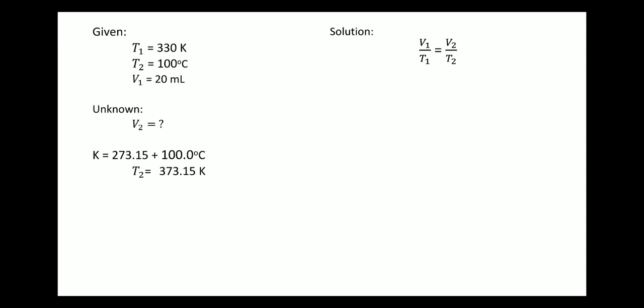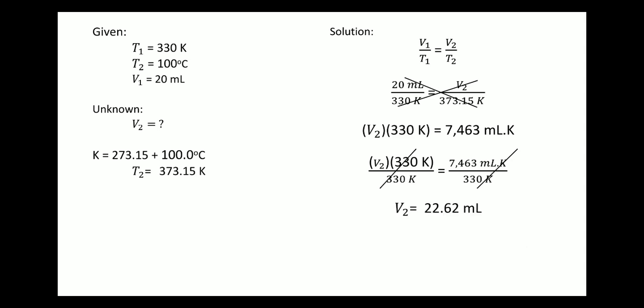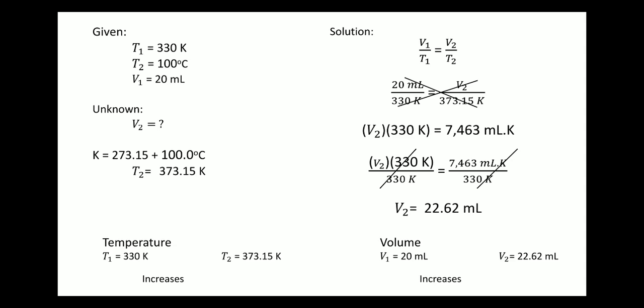We only need to convert T2: 273.15 plus 100 gives T2 equal to 373.15 Kelvin. Substituting the values: 20 mL over 330 Kelvin is equal to V2 over 373.15 Kelvin. Cross-multiply: 20 times 373.15 is equal to 7,463 mL·Kelvin. Dividing both sides by 330 Kelvin, 7,463 divided by 330 is equal to 22.62 mL.